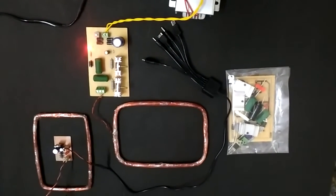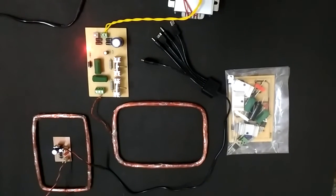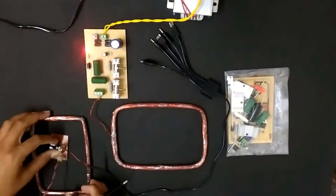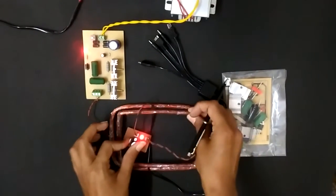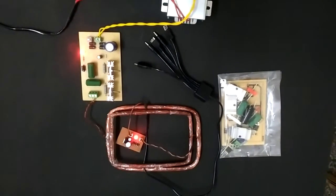This is a wireless mobile charging system, so we use a copper wire coil. Whenever we place this coil in this section like this, it starts to glow.